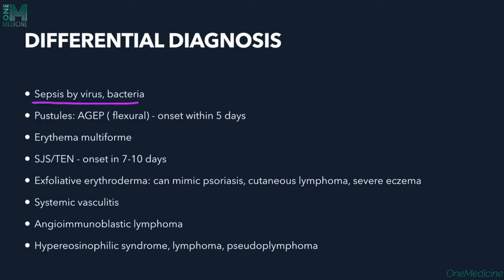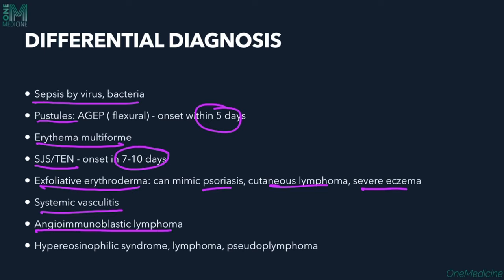Differential diagnoses for DRESS include viral or bacterial sepsis, AGEP (with sheets of non-follicular pustules), erythema multiforme, SJS/TEN (onset in 7–10 days), exfoliative erythroderma (as in psoriasis, cutaneous lymphoma, severe eczema), systemic vasculitis, angioimmunoblastic lymphoma, hypereosinophilic syndrome, lymphoma, and pseudolymphomas.